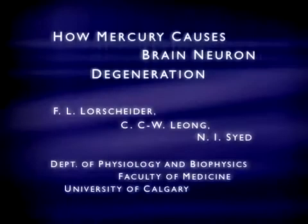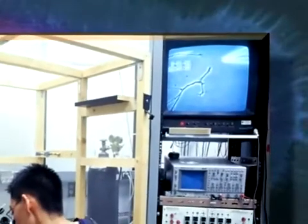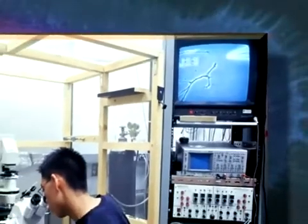How Mercury Causes Brain Neuron Degeneration. Mercury has long been known to be a potent neurotoxic substance, whether it is inhaled or consumed in the diet as a food contaminant.